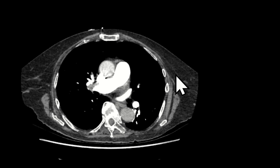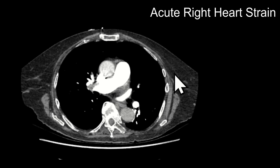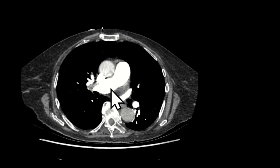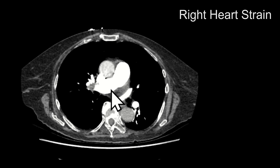There are three other very important things to cover: first, acute right heart strain; second, acute versus chronic PE; and third, common pitfalls on CTPA. Once you've identified acute PE you want to look for signs of right heart strain on CT. In the setting of acute large-volume PE, right heart strain is what can lead to death — it's the main cause of death from acute PE.